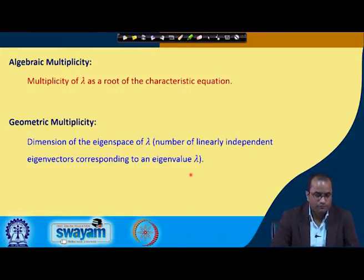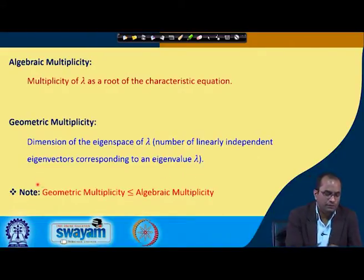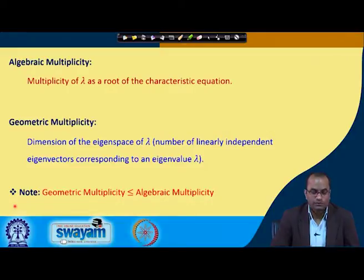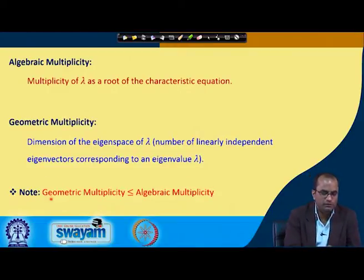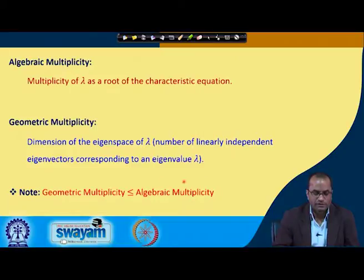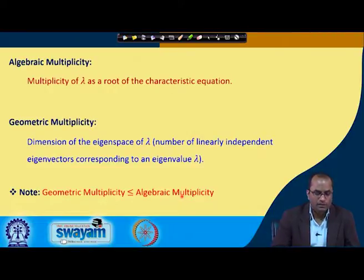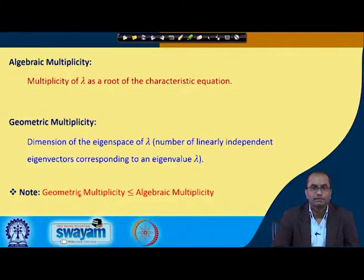With these two classifications we will move further. There is an important note: the geometric multiplicity is always less than or equal to the algebraic multiplicity. This is an important result which one can formally prove, but it requires more knowledge of diagonalization. We will keep in mind that if one particular eigenvalue is repeated three times, the corresponding geometric multiplicity — the number of linearly independent eigenvectors — cannot be more than three.